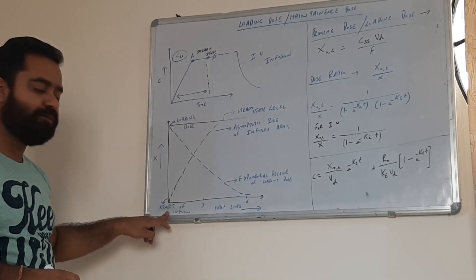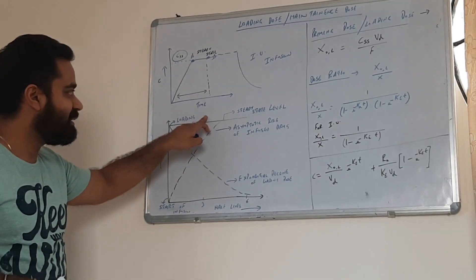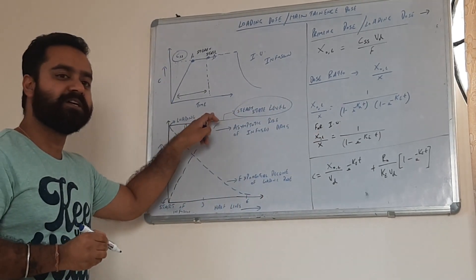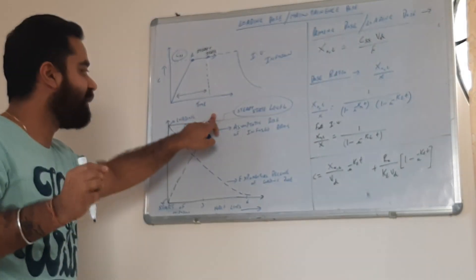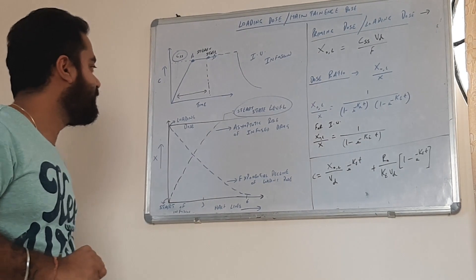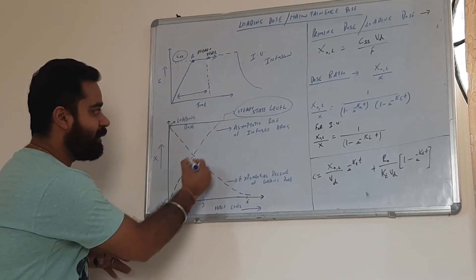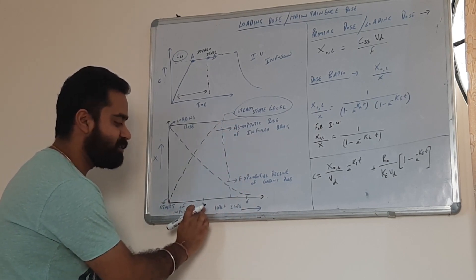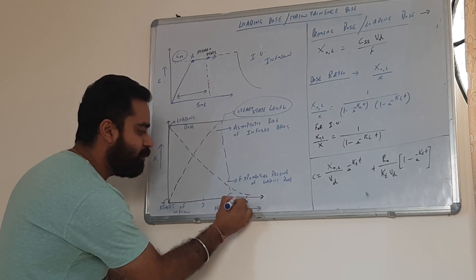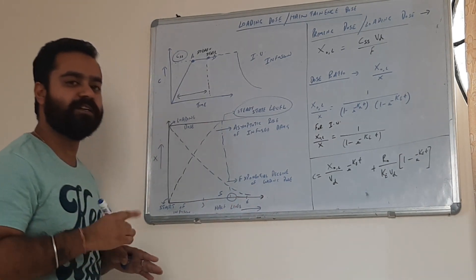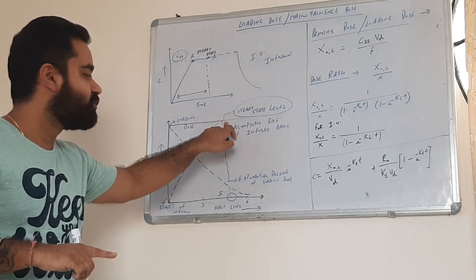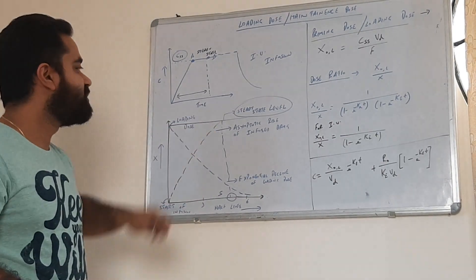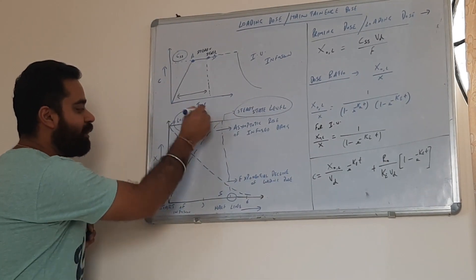Now, let's come to this graph. This is the starting point of infusion. The line at the top shows the steady state level — this is where the drug concentration should reach finally to give therapeutic activity. But this is going to take a long time. Considering half-lives 3 and 6, roughly it takes approximately 5 half-lives of the drug to reach this level. So, in order to shorten this time and immediately achieve the steady state level, we give the loading dose.